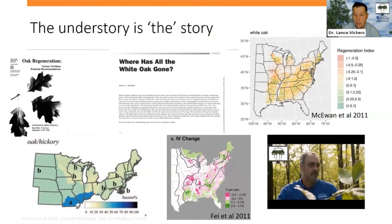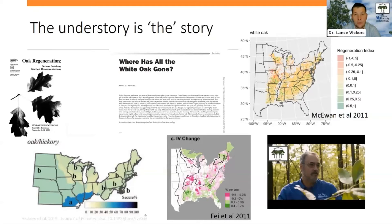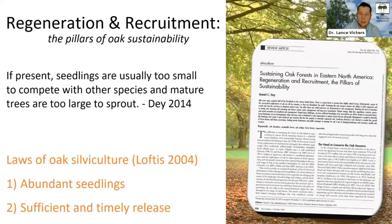You've probably heard folks like Dr. Jeff Stringer on this very program discuss a regeneration and recruitment crisis going on for White Oaks across the East. Oaks generally, and White Oaks specifically, have been the focus of a lot of research over the past 50 years, with folks noticing that it's really hard to regenerate oaks. There have been several articles showing how we basically don't have enough oaks in the understory. Dr. Dan Day's paper captures the situation pretty well.